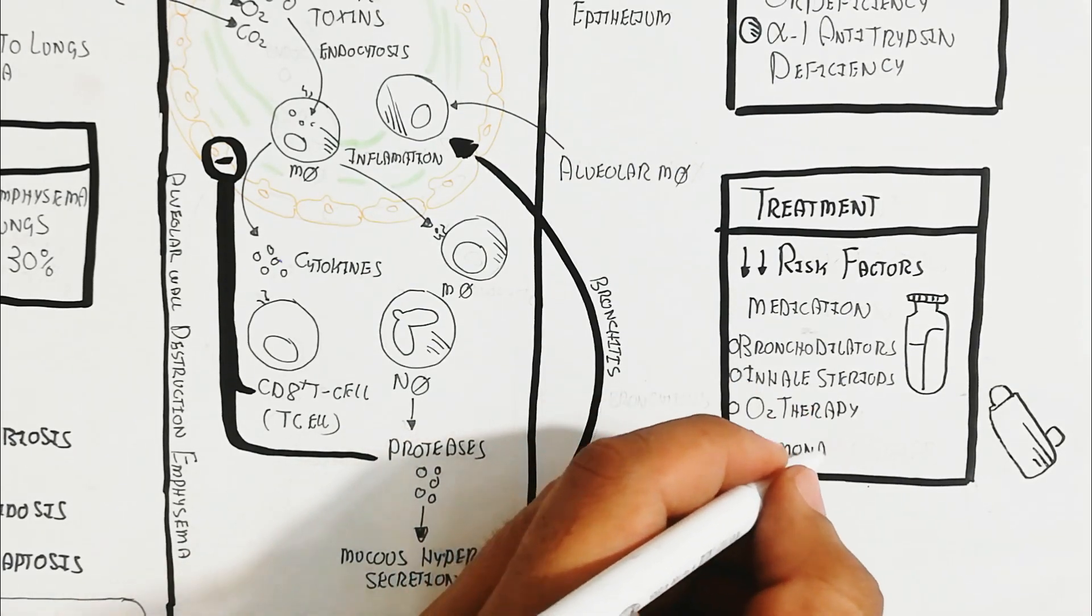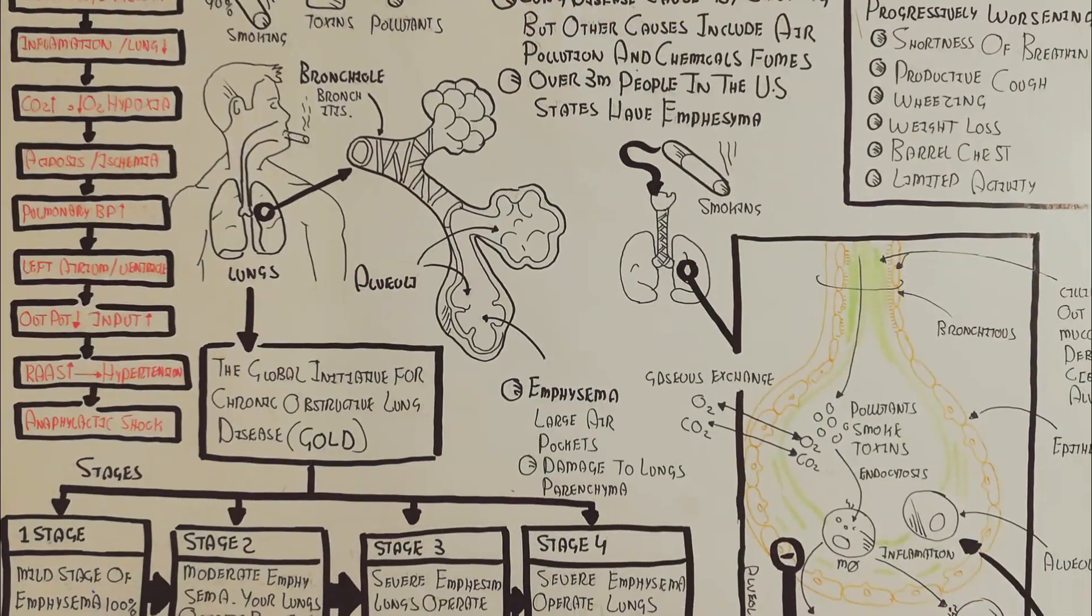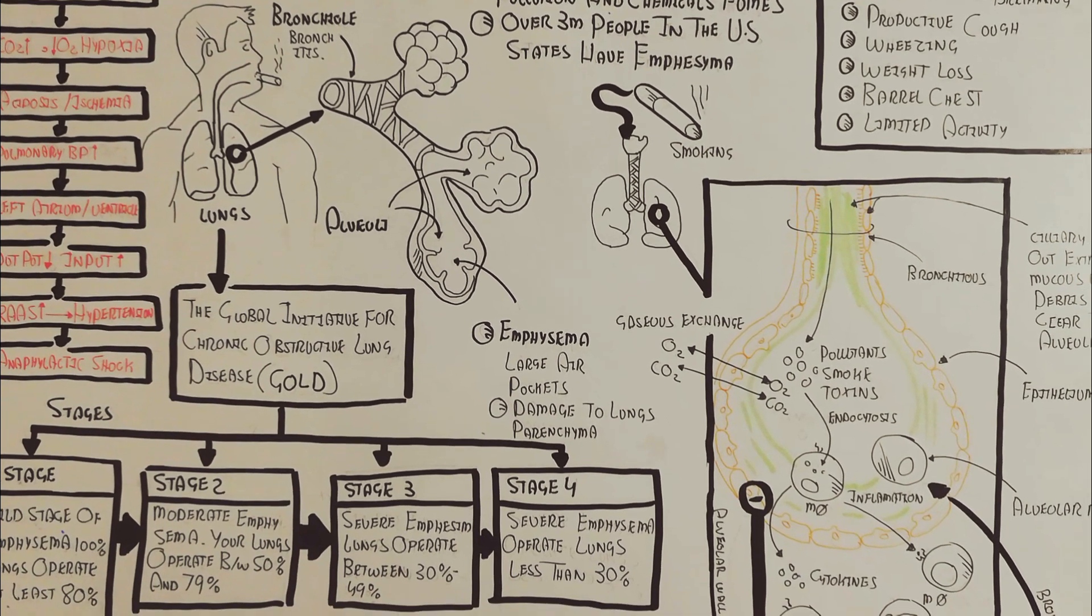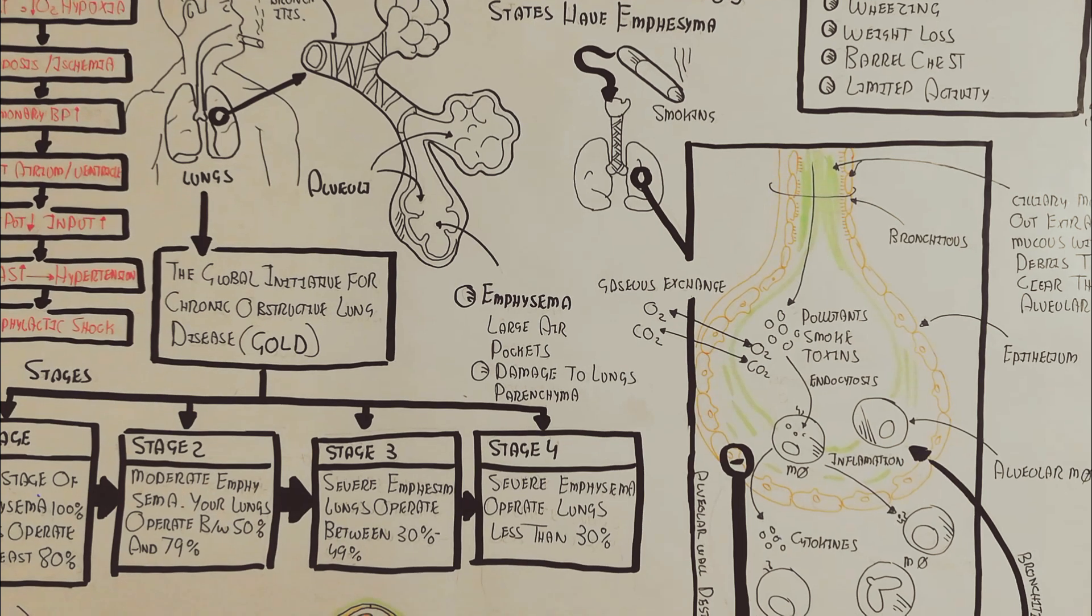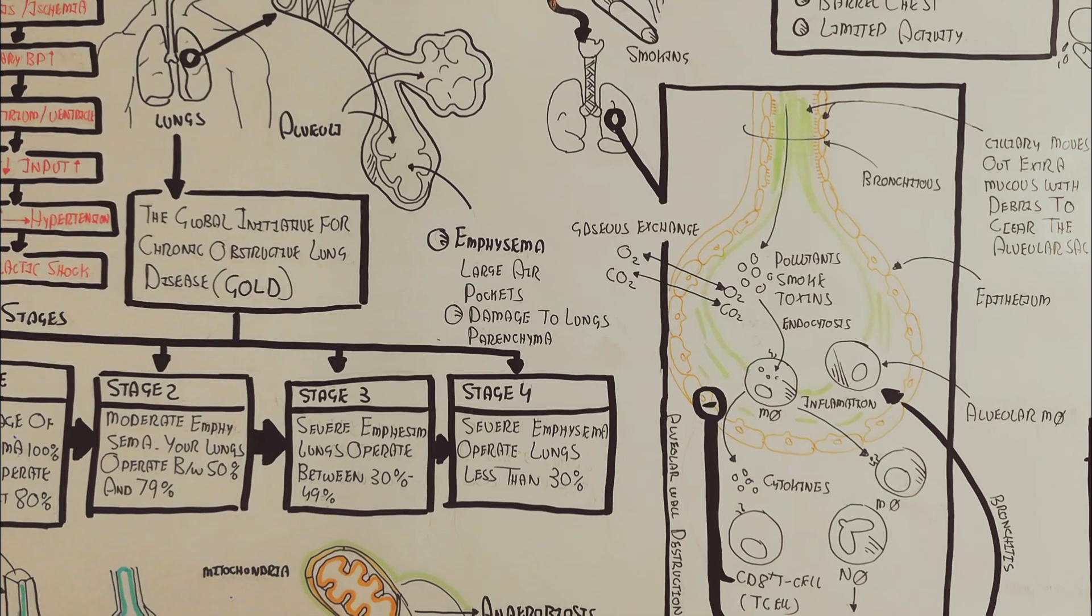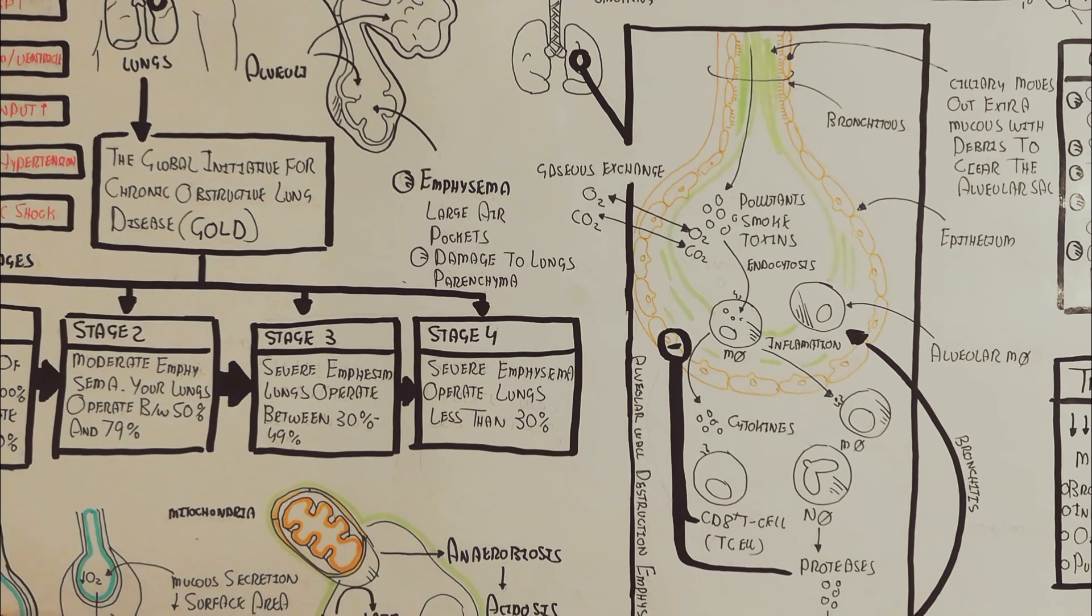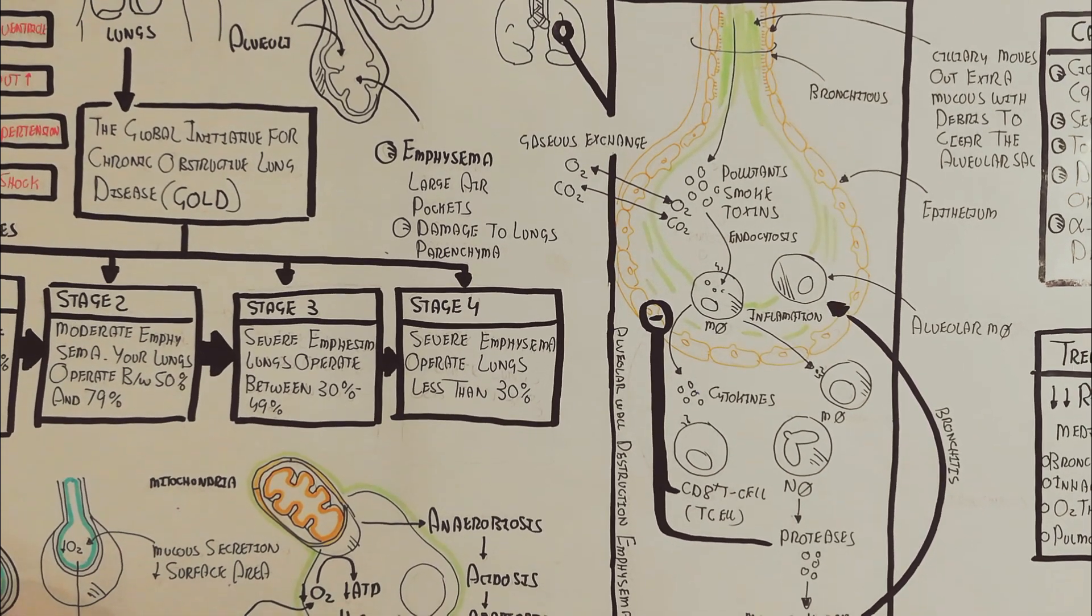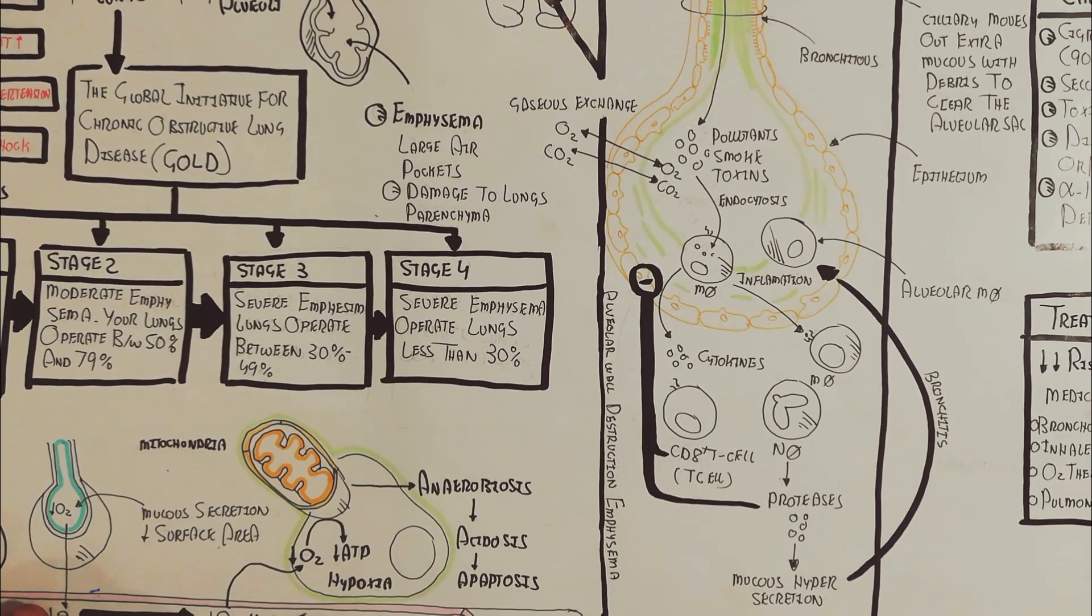In summary, emphysema is the rupture and damage of air sacs and alveoli, decreasing surface area. Bronchitis is bronchiole hardening and mucus secretion that impedes oxygen and carbon dioxide gas exchange.